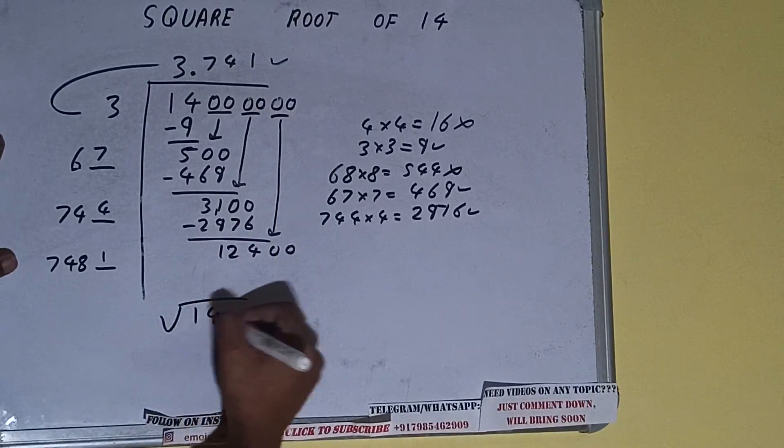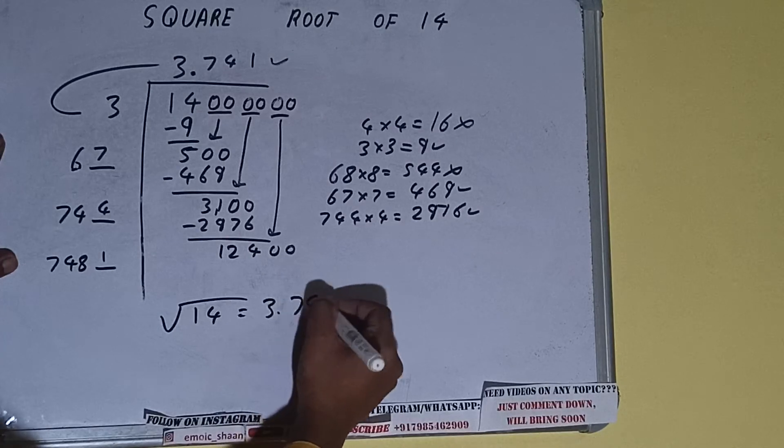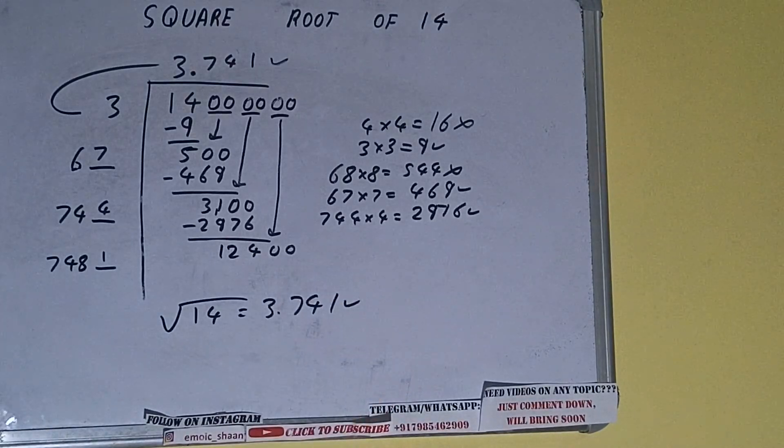So square root of 14 is equal to 3.741, that will be the answer. So this is all about square root of 14. If you found the video helpful, please leave a like, do consider subscribing, and thanks for watching.